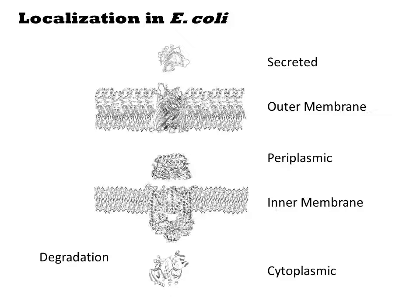There is the cytoplasm, the innermost compartment where all the central dogma processes and most of metabolism takes place. Then there is the periplasm between the two membranes and the extracellular environment accessible only by secretion. The two membranes also present distinct compartments to the cell where proteins can be inserted.